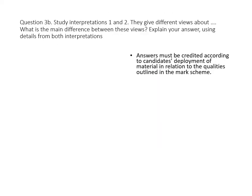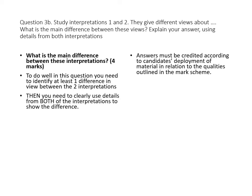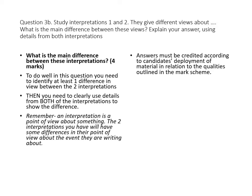Question 3B asks for the main difference between interpretations one and two. You can only get four marks for this. To do well, you need to identify a difference in view between the two interpretations, then use details — a quote or summary — from both interpretations to show how they're different. Remember, an interpretation is a point of view, and the two interpretations in the exam will definitely have differences in their point of view about the event or issue.